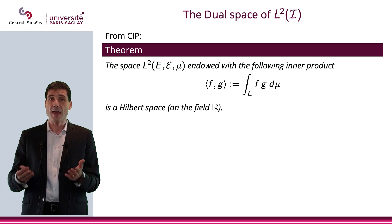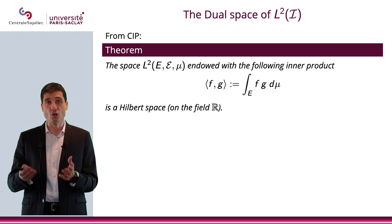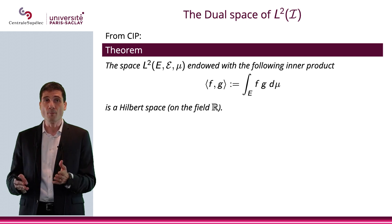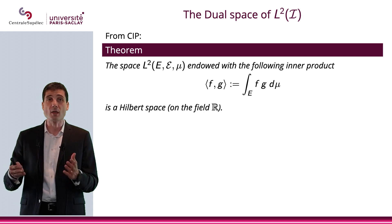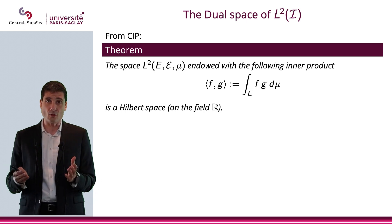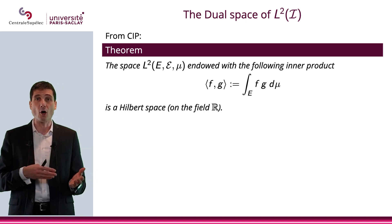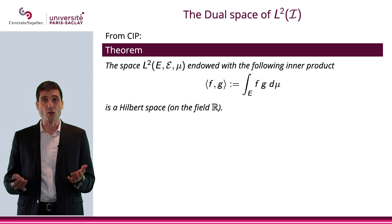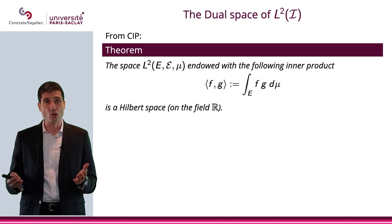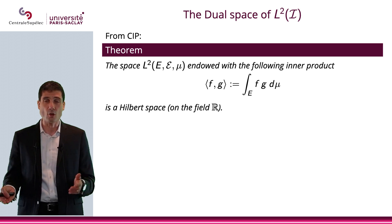This is a very general statement of the theorem where we have a space E, we have a sigma algebra curly E, and we have a measure mu. But of course, this can be considered in simply E equals R.